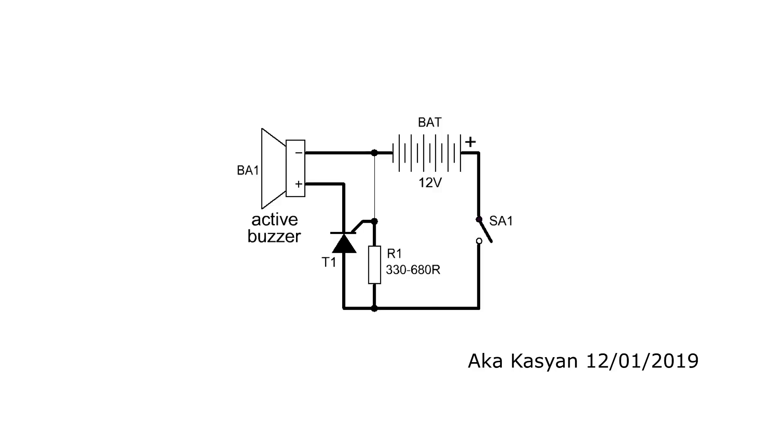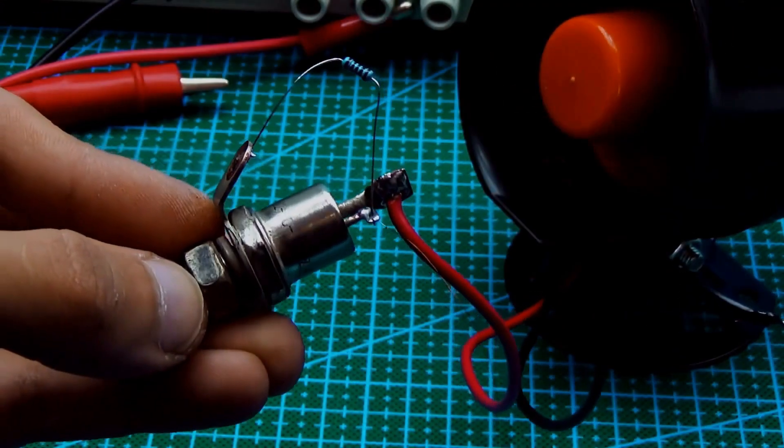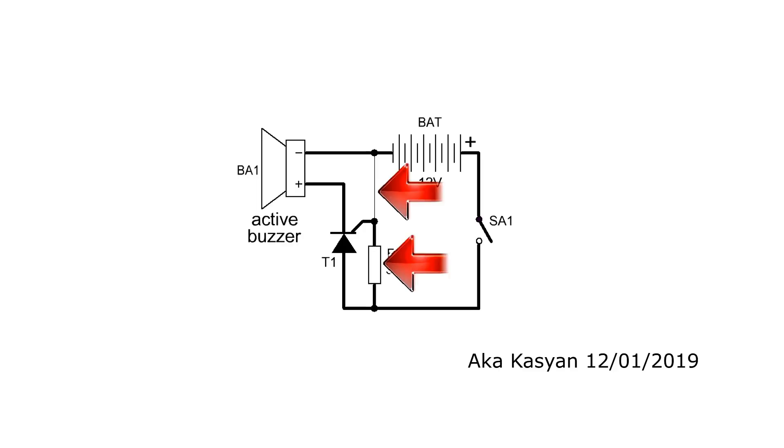The essence of the presented security device lies in a thin copper wire, which can be stretched near door and window openings. The wire can be of any length, meaning it can be stretched throughout the entire house. The wire with resistor R1 forms a kind of divider. If the wire is intact, the control electrode of the thyristor is grounded, and the thyristor is closed.